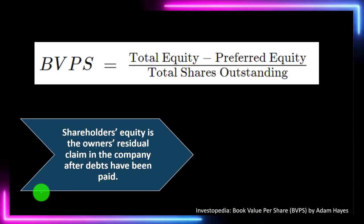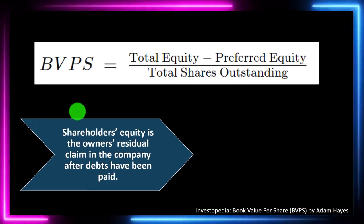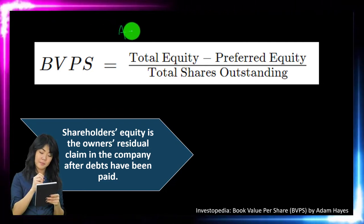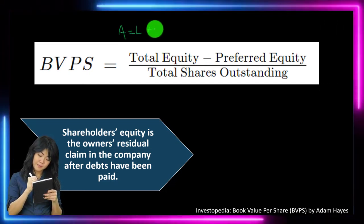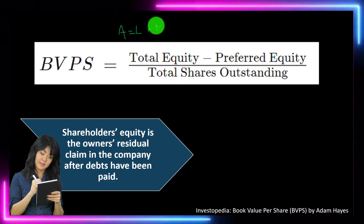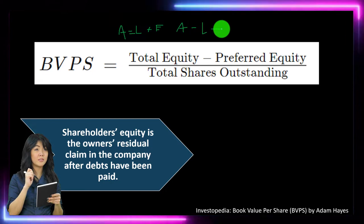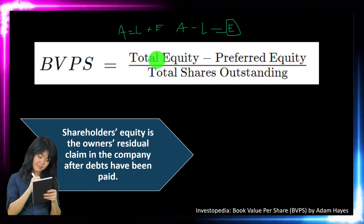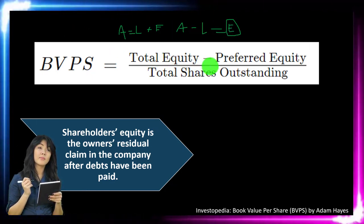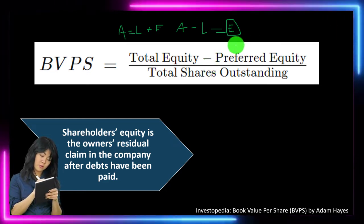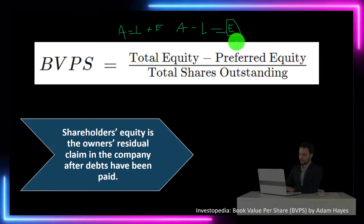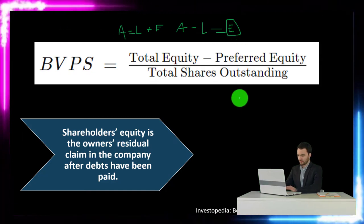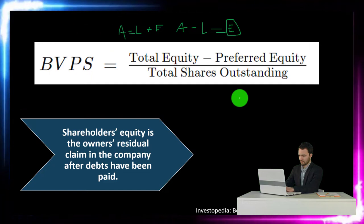The formula for book value per share is total equity minus preferred equity divided by total shares outstanding. The accounting equation is assets equal liabilities plus equity, or assets minus liabilities equals equity. Preferred stock is technically equity — included in the equity section on the balance sheet — but it acts like a bond. So for common shareholders, you subtract the preferred stock from total equity, then divide by total outstanding shares to get it on a per-unit basis.